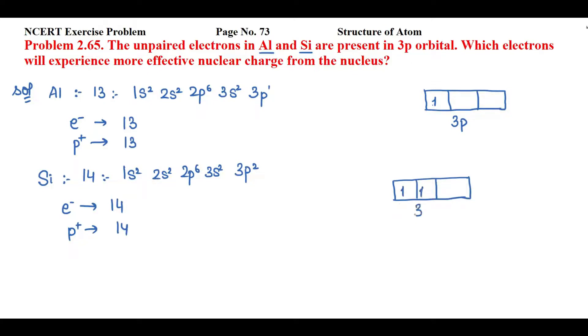If you see, orbital is same but number of unpaired electrons are different. Now if I'll consider number of protons over here, because force of attraction is due to number of protons, number of protons are more in case of silicon. So silicon will experience more effective nuclear charge.